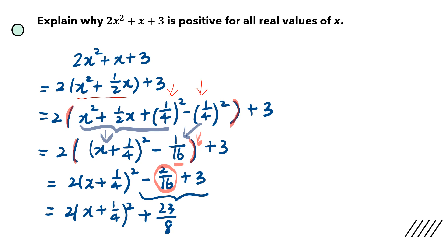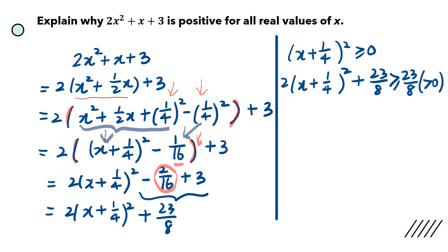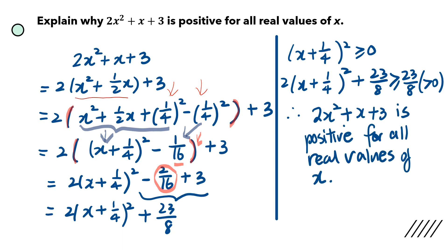We have successfully converted the given function into the completed square format. Now we need to do some explanation. We know that when you square x plus 1 quarter, it's always a positive value — it can be 0, which happens when x equals negative 1 quarter. Then multiplying by 2 and adding 23 over 8 on both sides, you end up getting the result is greater than or equal to 23 over 8. Since 23 over 8 is positive, it's more than 0. Therefore we conclude that 2x squared plus x plus 3 is positive for all real values of x.